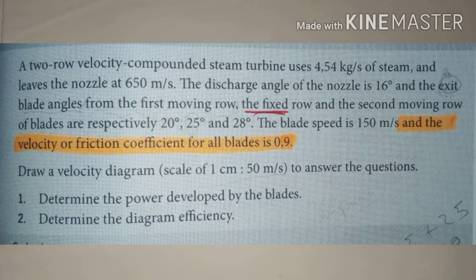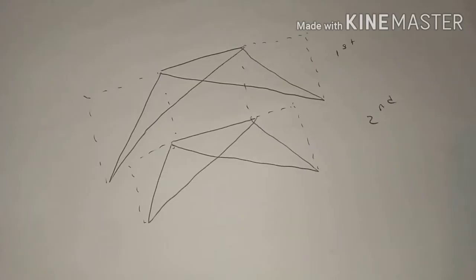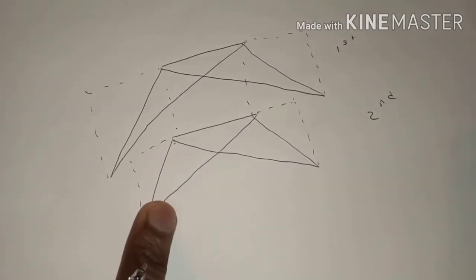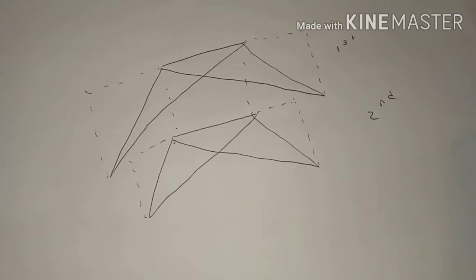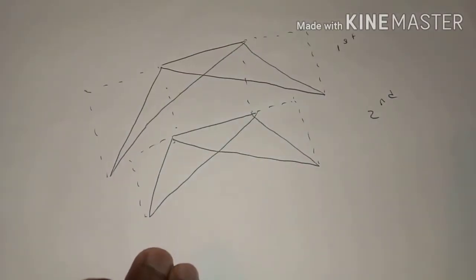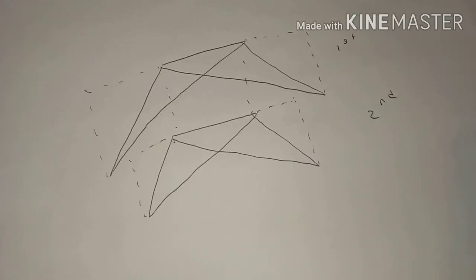Question one: determine the power developed by the blades. Question two: determine the diagram efficiency. Before we continue, we know we are dealing with a two-row velocity compounded steam turbine, meaning we are dealing with a two-stage velocity diagram. We are going to have two diagrams, so let's draw these two diagrams and then record the information given to us to avoid confusion.